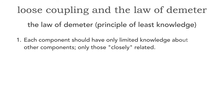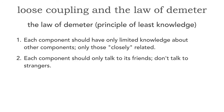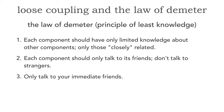It sounds very simple and obvious, but there are three rules associated with the Law of Demeter. Rule number one: each component or service should only have limited knowledge about other components — only those closely related. Rule number two: each component or service should only talk to its friends; don't talk to strangers. Rule number three: only talk to your immediate friends. For those of us with young children, this sounds familiar — we actually practice the Law of Demeter almost every day with our kids.